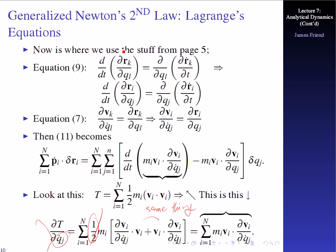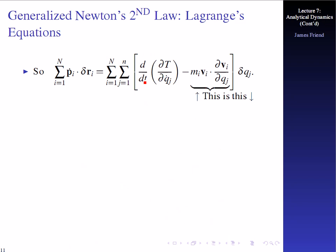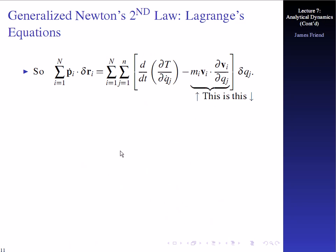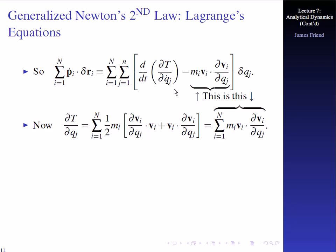Notice we have partial of v sub k with respect to q dot sub l, and partial of v sub i with respect to q dot sub j. More importantly at the moment, this looks suspiciously similar to that. That's why we can write the time derivative of the partial of the kinetic energy with respect to q dot sub j. By showing what we did just below — that's partial of T with respect to q sub j dot — if we take the time derivative of it, that's exactly this whole thing including that. That's right here.